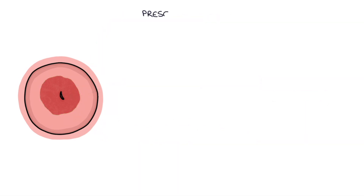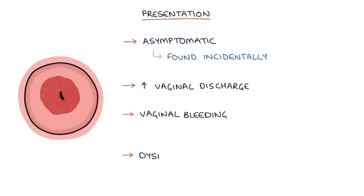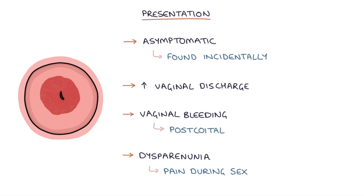Let's talk about the presentation. Many cervical ectropions are asymptomatic and are found incidentally during a speculum examination for another reason, for example during a smear test. Ectropion may present with increased vaginal discharge, vaginal bleeding, or dyspareunia, which is pain during sex. Intercourse is a common cause of minor trauma to the ectropion, triggering episodes of post-coital bleeding.